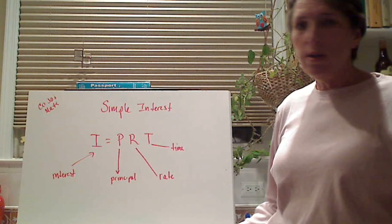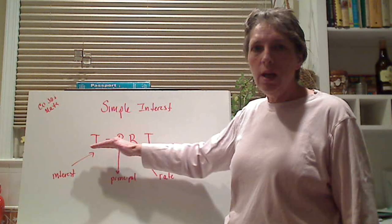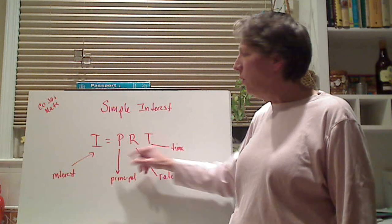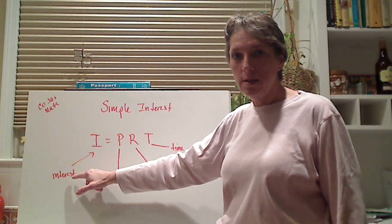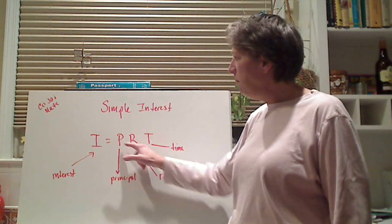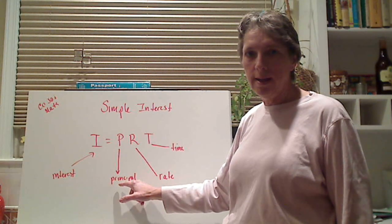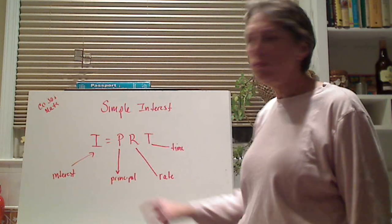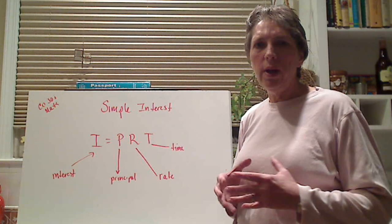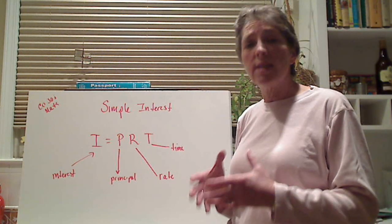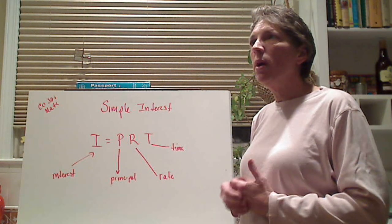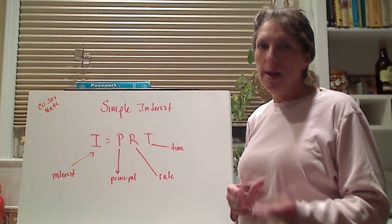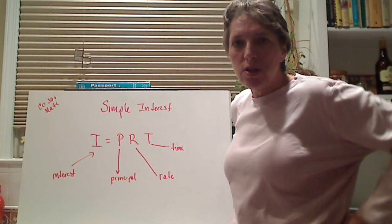There's a formula that you have to know. It's called I equals PRT, where I is the interest and you need to know this. P is the principal, P-R-I-N-C-I-P-A-L. The principal is the amount of money that we're either putting into the bank to save or the amount of money that we want to borrow to buy something. So the principal is always associated with money.